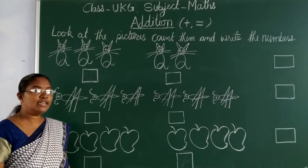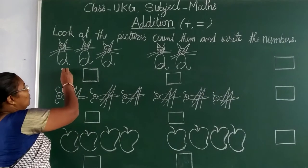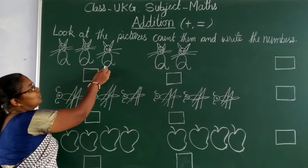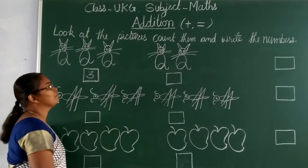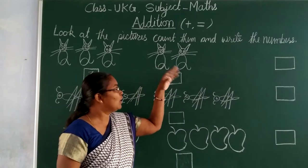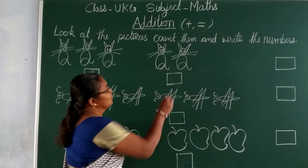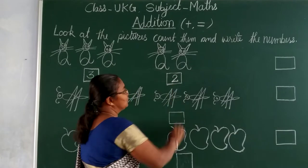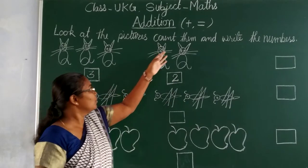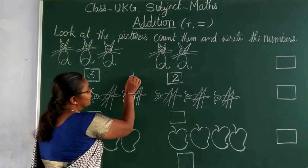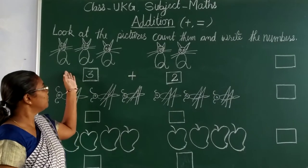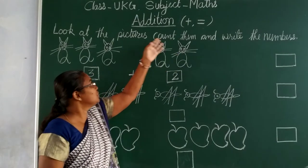How many cats are here? 1, 2, 3. So we write number 3. Next group: 1, 2. So we will write here 2. Now we put the sign here plus, that means we have to count together.